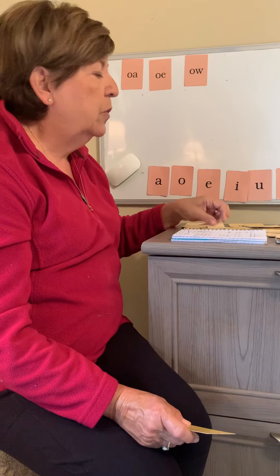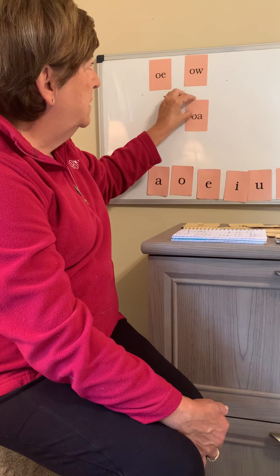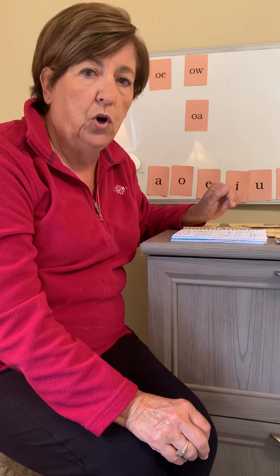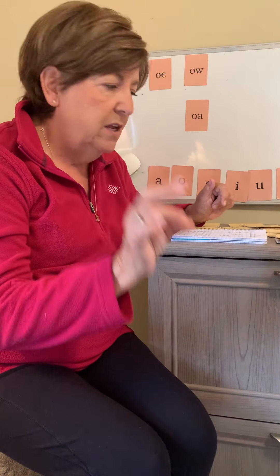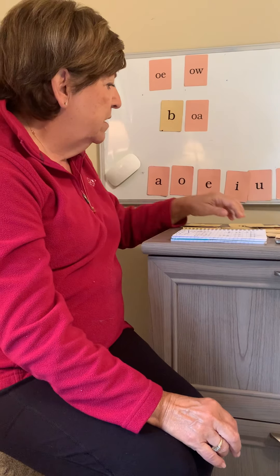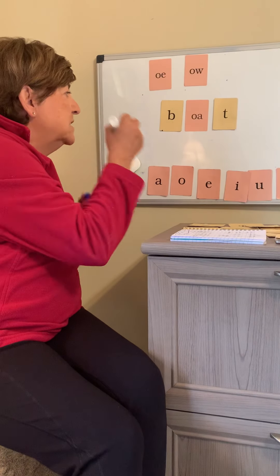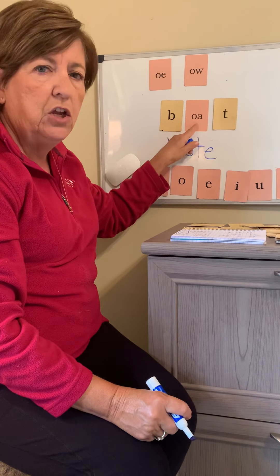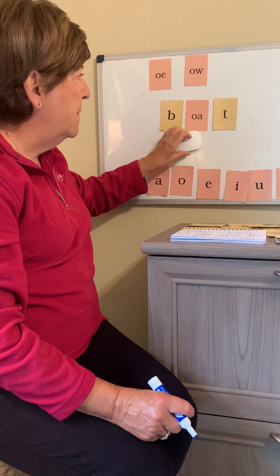Today we're going to add on three more ways to build the long O sound, and each one of them has its own set of rules. Let's first talk about OA. The thing about OA is it must always be in the middle of a word. So for instance, when I build the word boat, I could spell it B-O-T, but you've probably seen the word boat enough times that your brain tells you to use O-A. So that's the O-A rule — it must be in the middle.